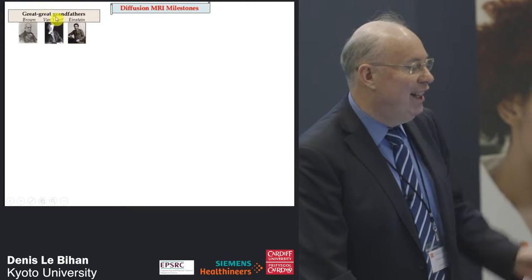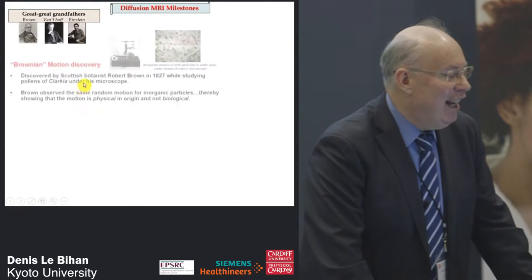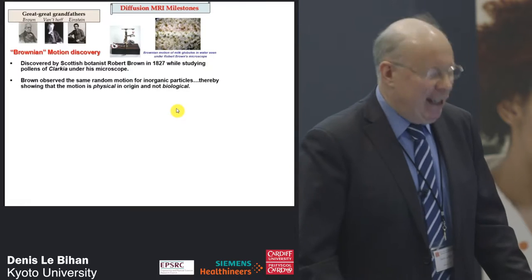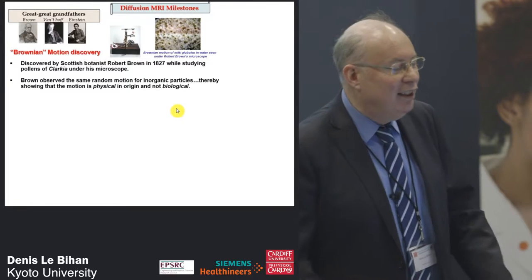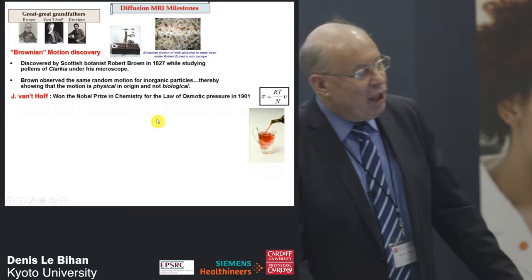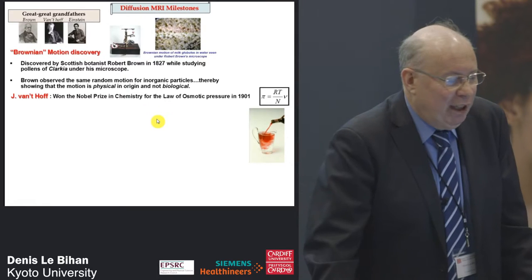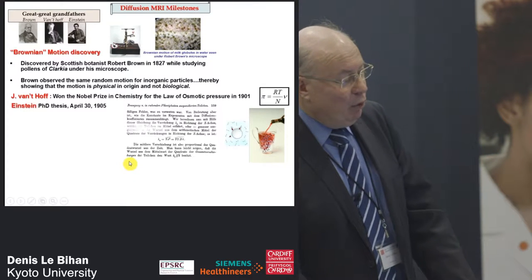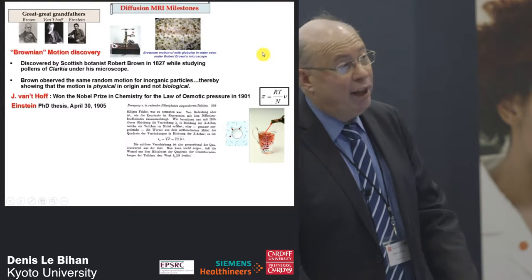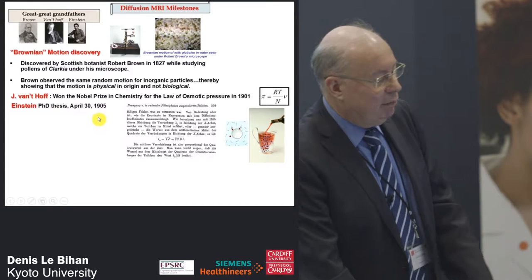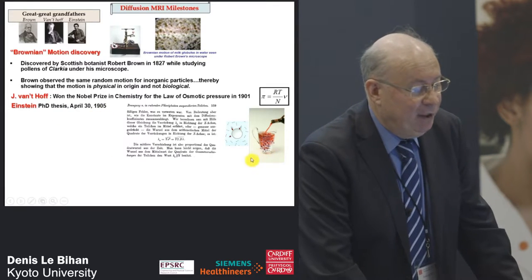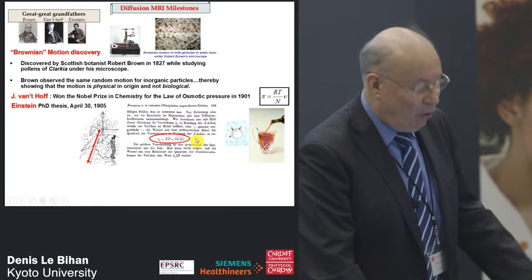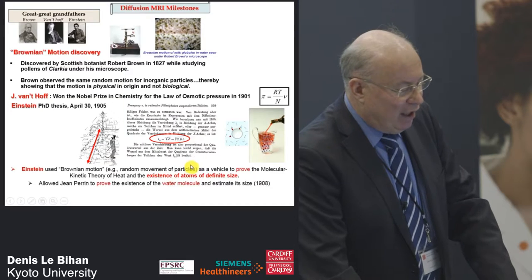Brown basically discovered Brownian motion. I know that diffusion is not exactly Brownian motion in biological tissues, but that's where it started. And then I like to mention Vantov — of course there are Fick's laws — but I think he was also quite a big pioneer in diffusion. The most important cornerstone of all what we do is Einstein with his PhD thesis back in 1905, where he explained diffusion in terms of Brownian motion, and this is the equation we are all using when we do diffusion MRI.